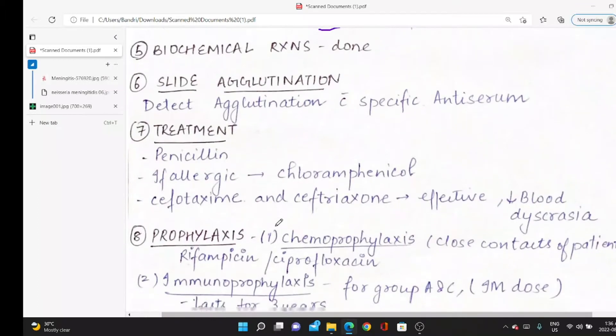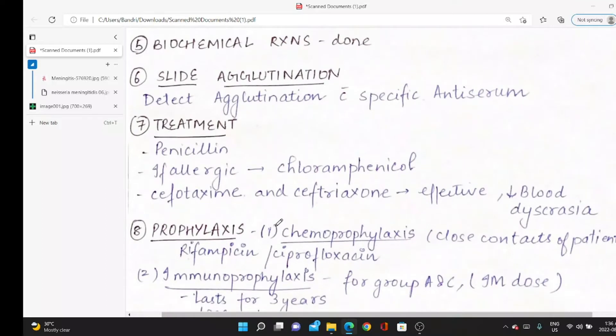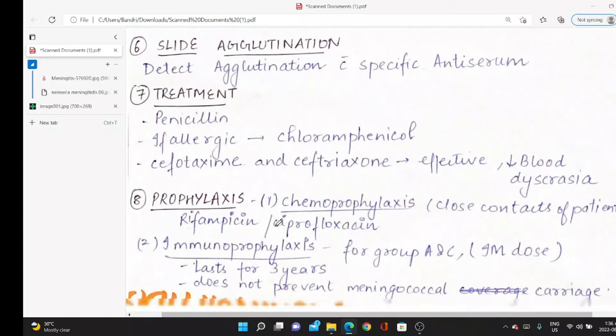How do we treat it? Once diagnosis is made, we prescribe medications. Penicillin is effective. If somebody is allergic to penicillin, use chloramphenicol. Better drugs now in market: cefotaxime and ceftriaxone. They're more effective and cause less blood dyscrasia—changes in blood cells.